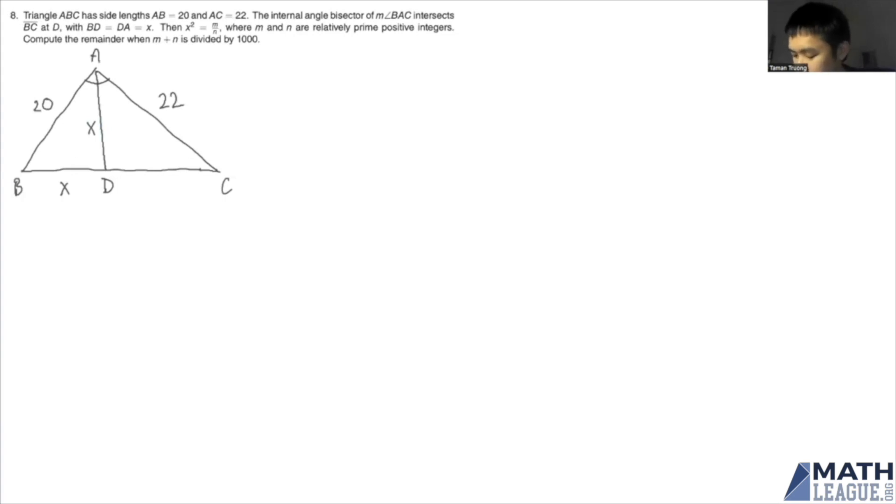Triangle ABC has side lengths AB equals 20 and AC equals 22. The internal angle bisector of angle BAC intersects segment BC at D with BD equals DA equals X. Then X squared equals M over N, where M and N are relatively prime positive integers. And you compute the remainder when N plus N is divided by 1,000.